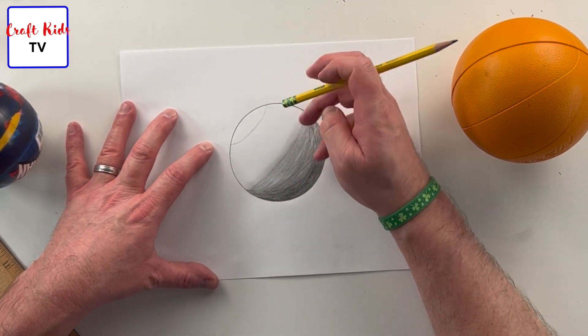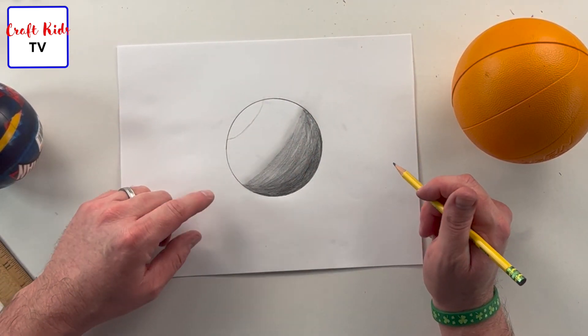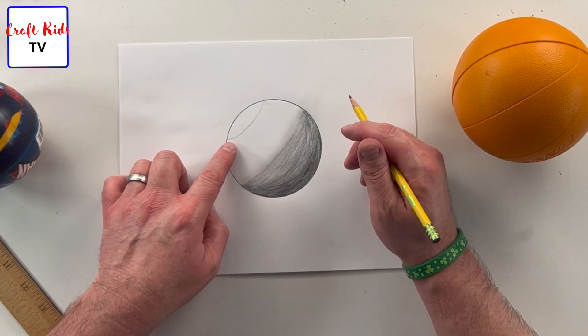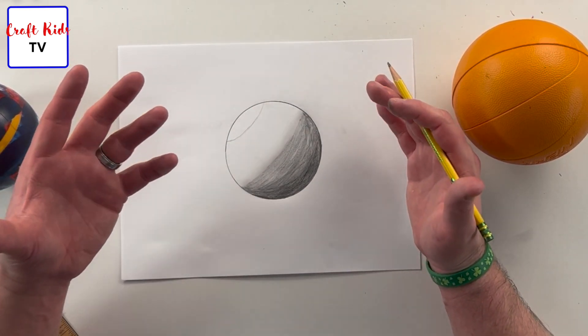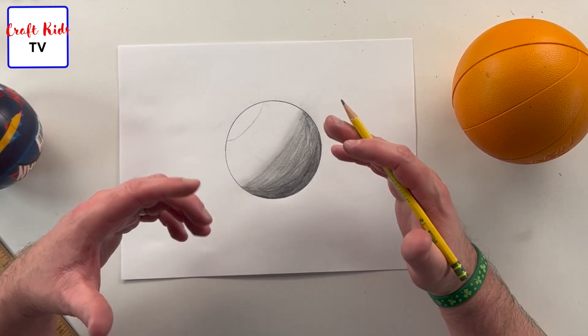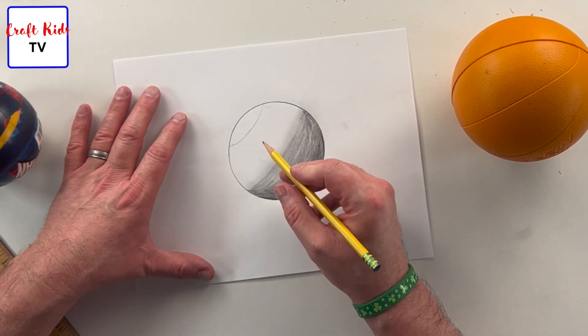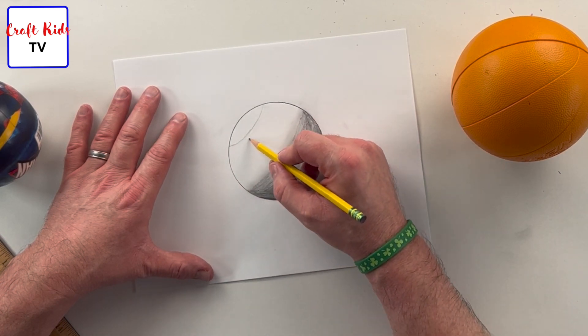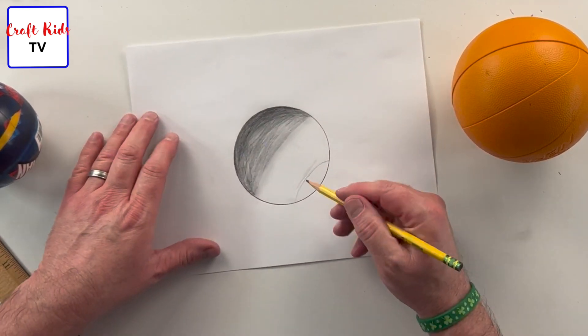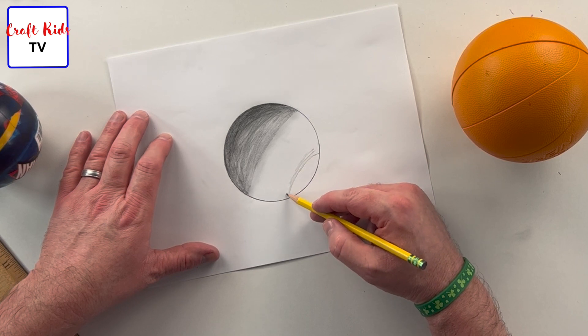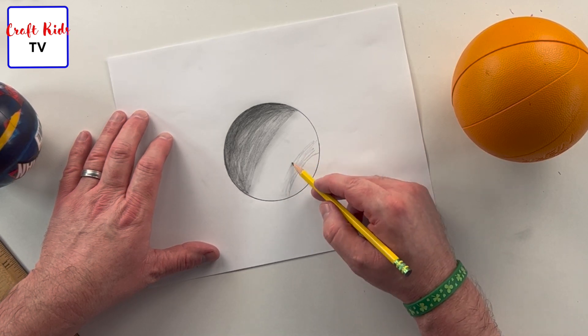The shading in this area here would be like what's technically called half tones, but I like to just call light shading. So you're just gonna go really light. Again, I'm gonna turn my paper, it's easier for me. I'm just gonna go super light here.